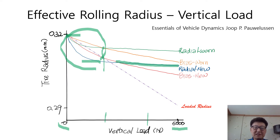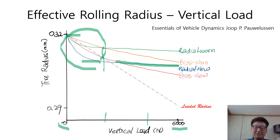Moving to the bias tire, in the initial part of loading governed by radial stiffness, the effective rolling radius decreases, but not as much as radial tire, due to the steeper radial stiffness than that of radial tire. But the effective rolling radius decreases significantly compared with that of radial tire because of the lower circumferential stiffness than that of radial tire in this area.